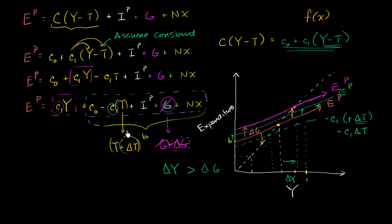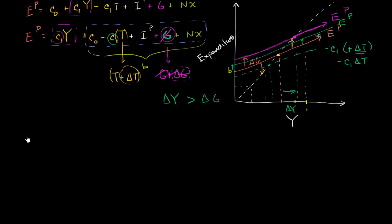Now, one thing I touched on in the last video is that whatever our change is — however much we shift this aggregate planned expenditure curve — the change in our output was actually some multiple of that. I want to show you mathematically that the multiple really is the multiplier. So let's rewrite the planned expenditure expression: planned expenditure equals marginal propensity to consume times aggregate income, plus all this other business — let's just call that B — to make it simple to manipulate.